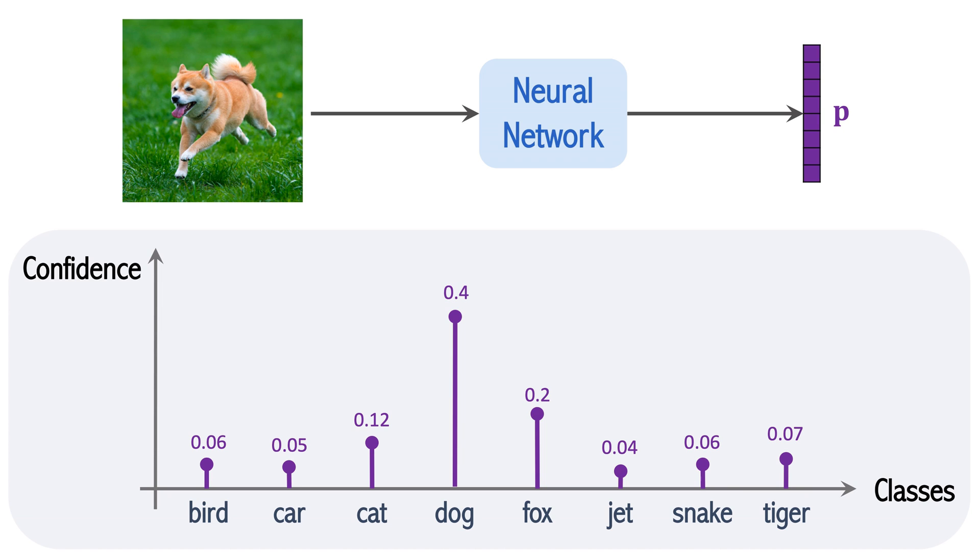For example, the figure shows the 8 elements of vector p. Each element is the confidence of a class. The elements are between 0 and 1, and they add up to 1. The dog class has the biggest confidence, 0.4. It means the neural network has 40% confidence that the image contains a dog.